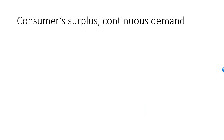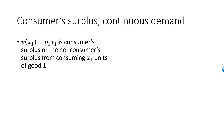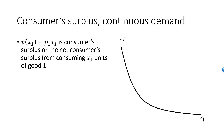V of x1, the area under the demand curve, is the gross surplus. This is how much x1 units of good 1 is worth to the consumer. She only pays p1 times x1, and as before, V of x1 minus p1 x1 is defined as the consumer's surplus, or the net consumer surplus from consuming x1 units of good 1. Here is a picture and a demand curve. At the price p1, the individual consumes x1 units of good 1. The net consumer surplus is then the area between the demand curve and the horizontal line intersecting p1.